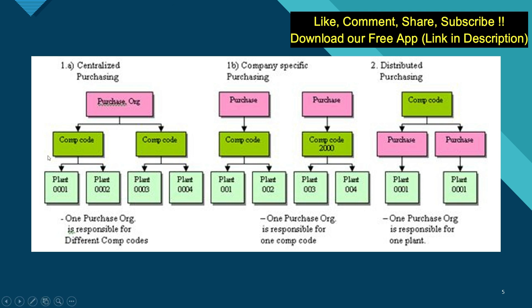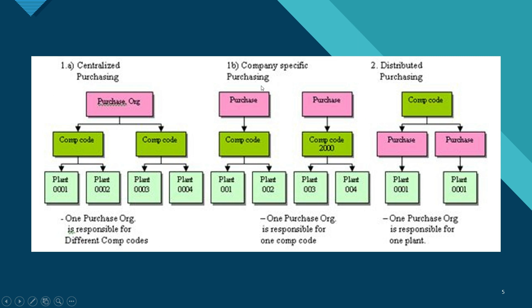There are three types of purchasing organizations. The first is centralized purchasing, where one purchase organization is assigned to multiple company codes, and each company code has multiple plants. The second is company-specific purchasing, where each company code has a dedicated purchase organization assigned to it, and each company code has multiple plants.